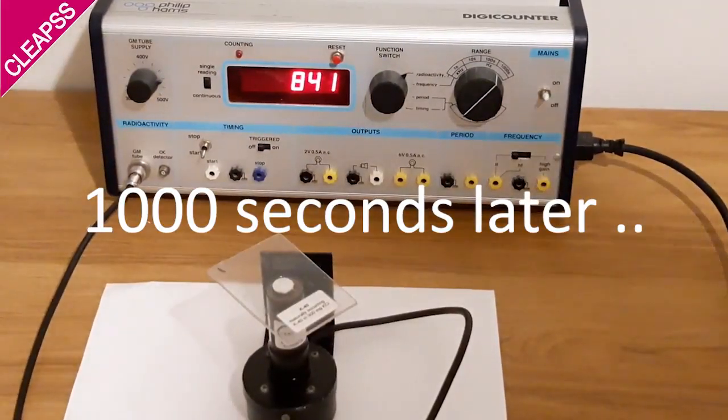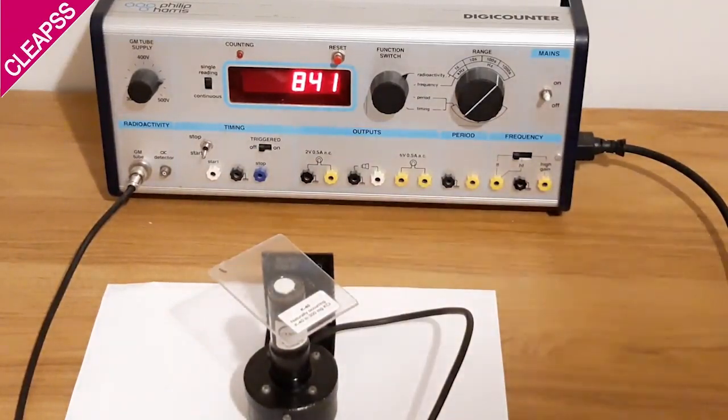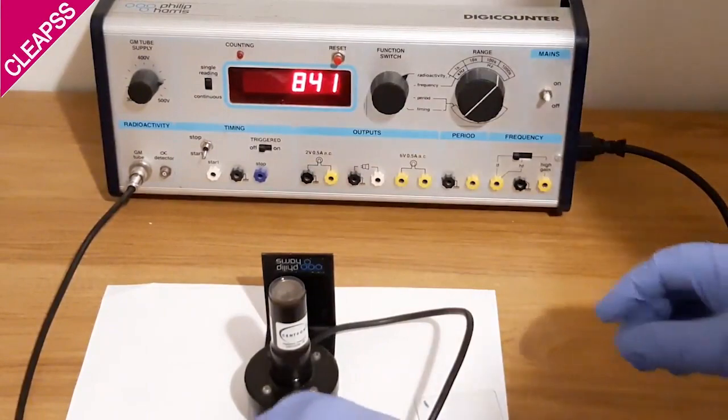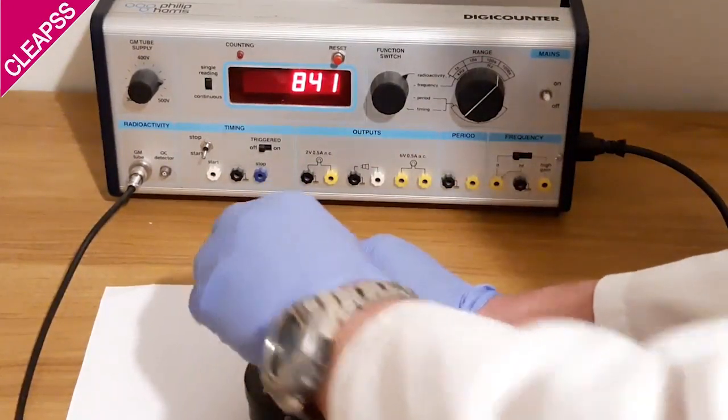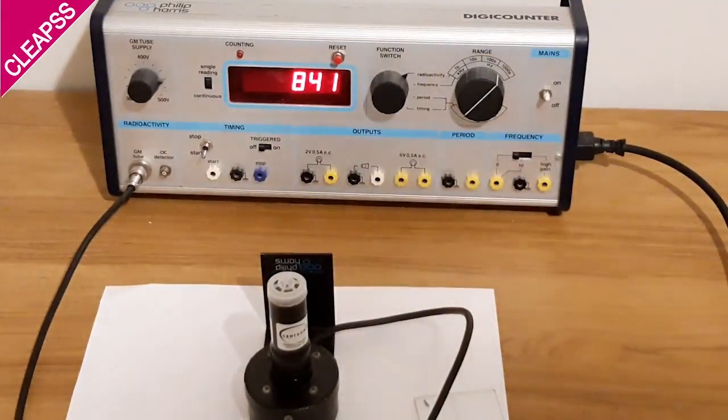After 1000 seconds with the test source, take the count, in this case it's 841. Remove the test source, replace the cap, and then go on to calculate the comparative GM tube efficiency.